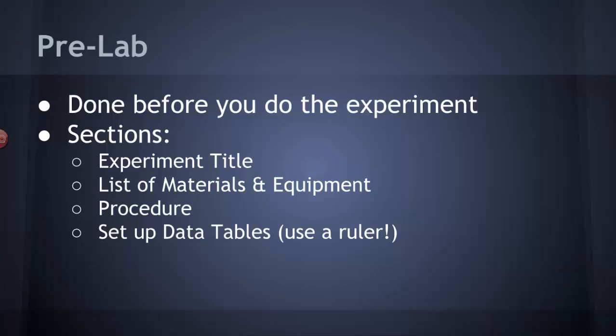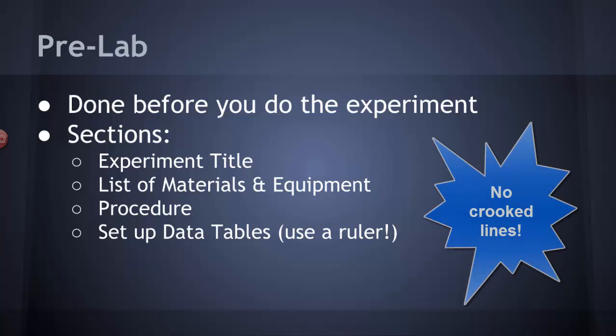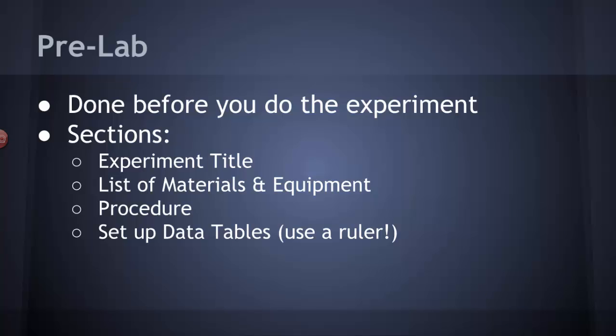And then, because you haven't done the experiment yet, you don't have any data, but you want to set up a place for that data to live. So you're going to set up some data tables, and that usually means you need to use a ruler or straight edge to make some nice straight neat lines. Neat data tables are really useful in lab because they help keep all of your data and observations organized, and an organized lab book is a really good lab book to have.